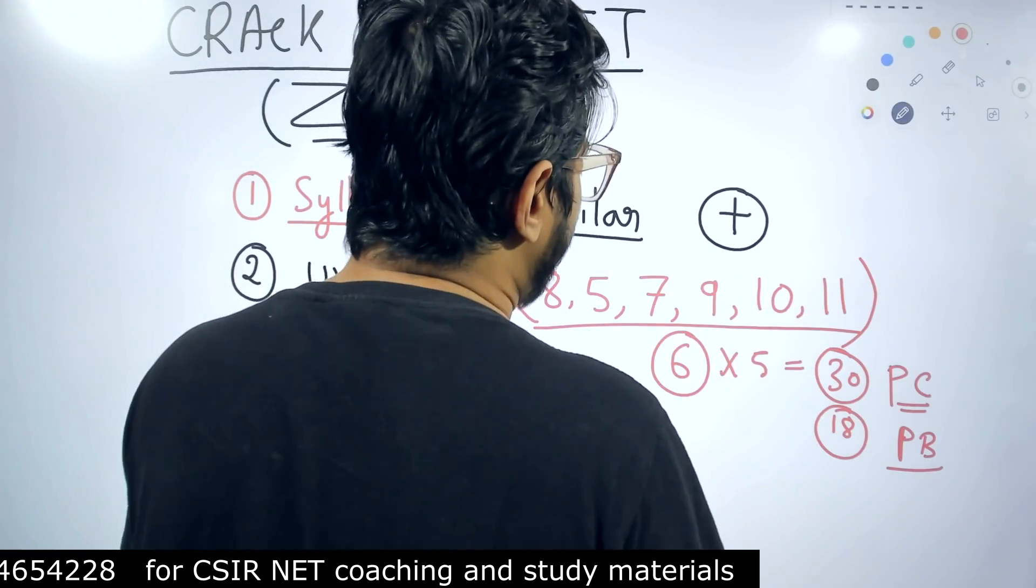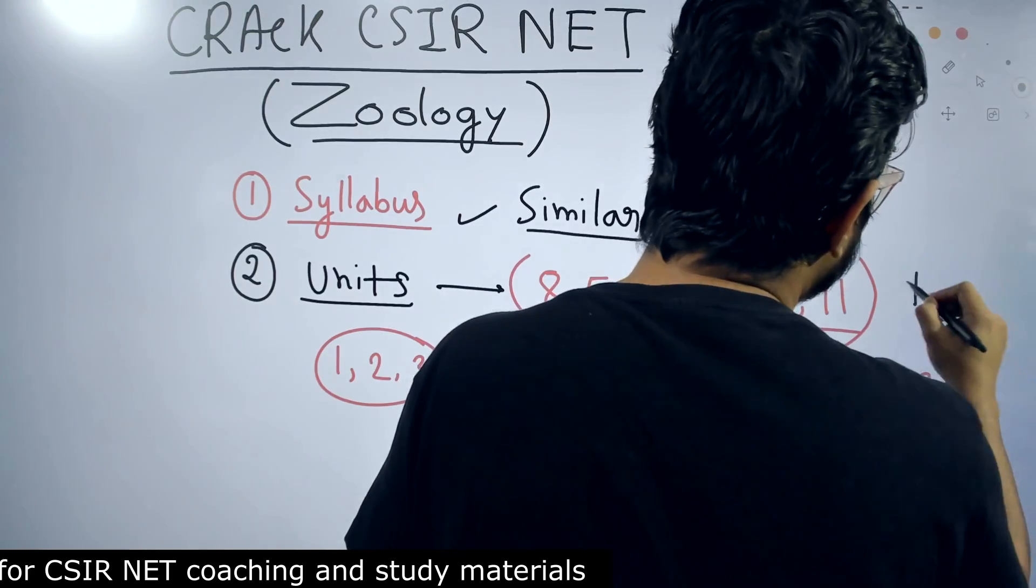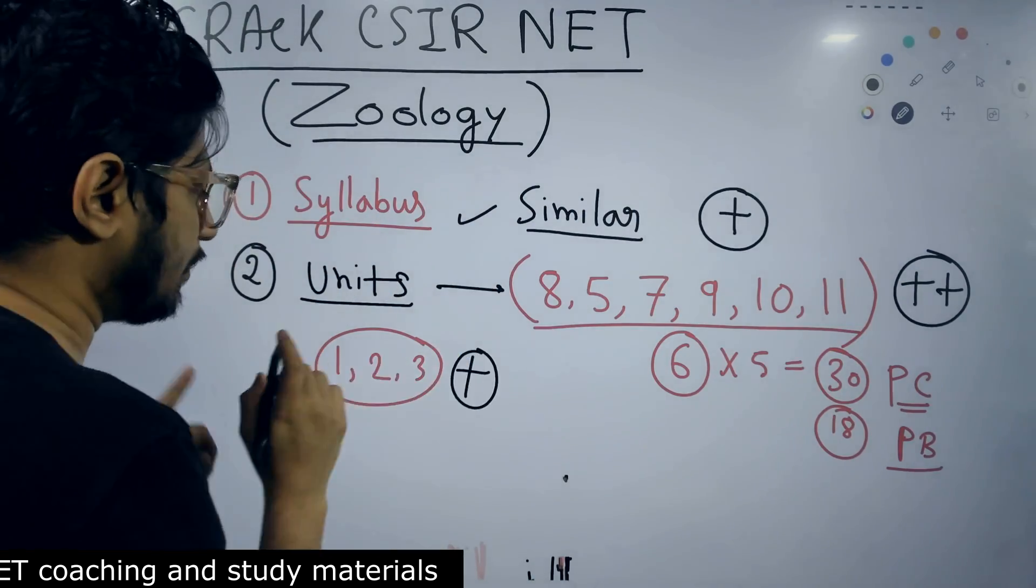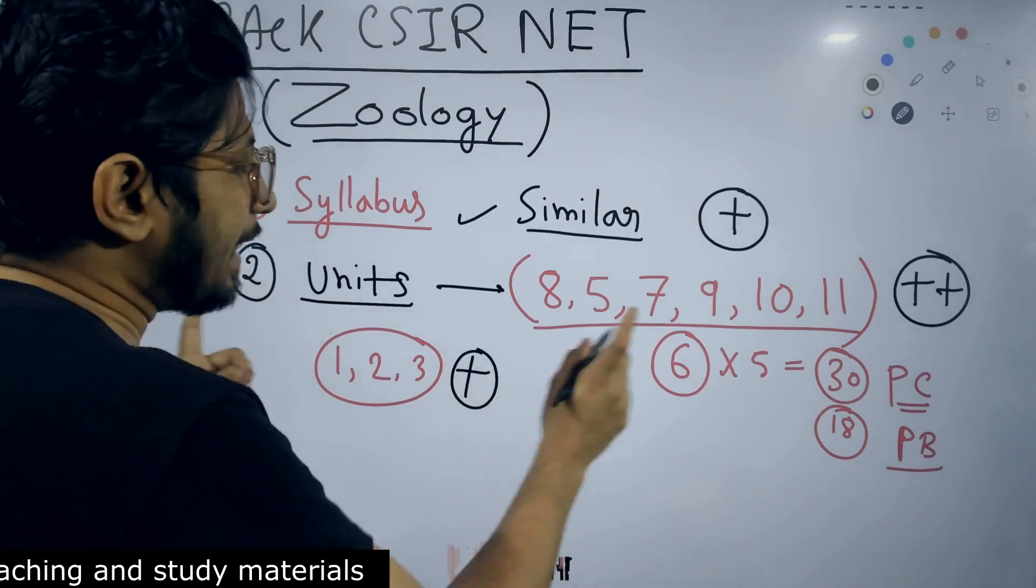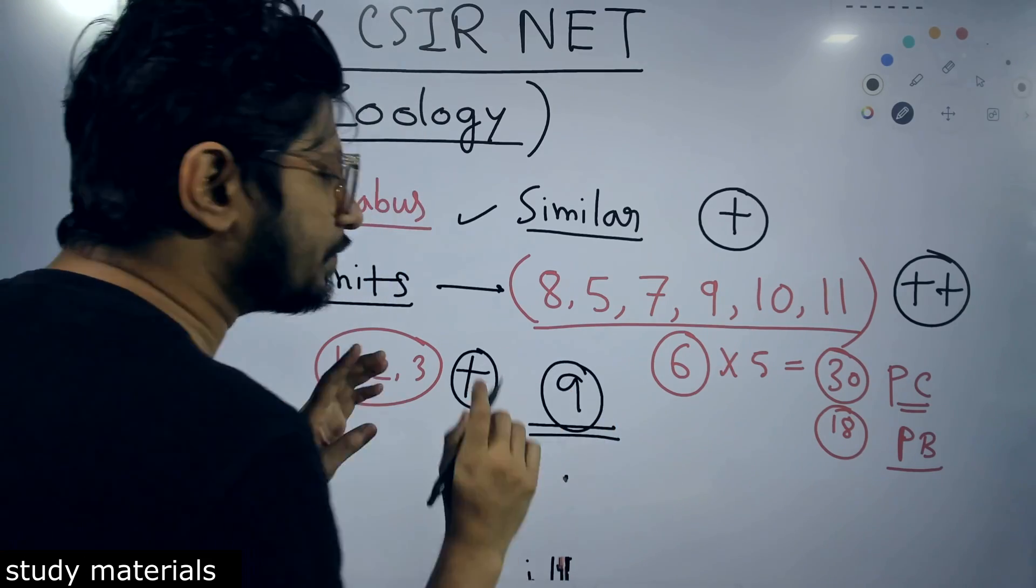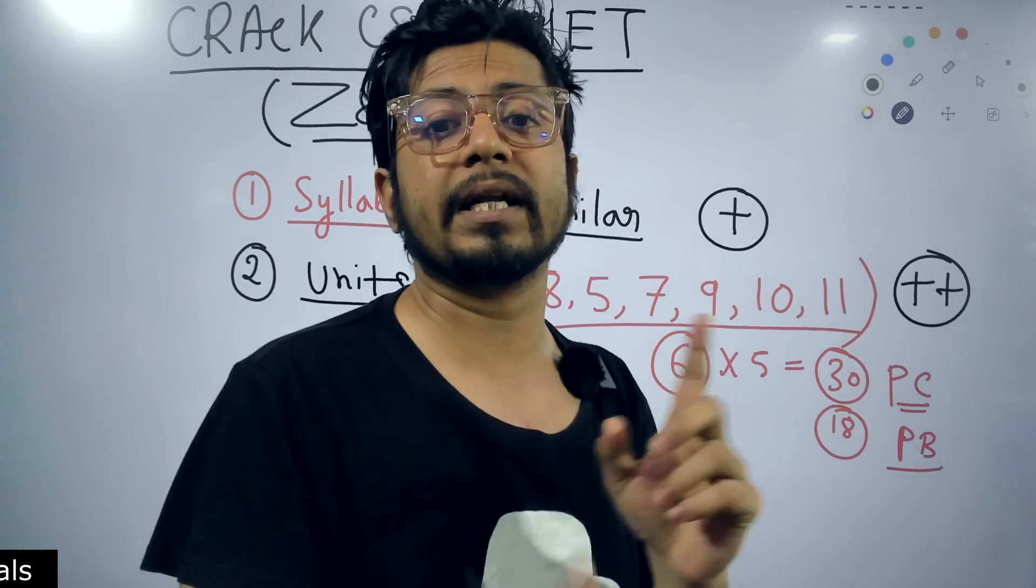So Units 5, 7, 8, 9, 10, and 11 should be your prime target, target number one. Then the lesser target will be Units 1, 2, and 3. If you combine them together, then you'll get nine units, and that is kind of sufficient for qualifying CSIR NET Life Science examination if you prepare them to the depth of knowledge.